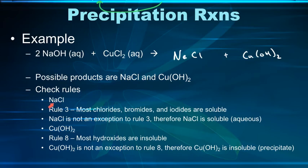Let's check the rules. So for NaCl, immediately, rule 1 will tell you that all 1A metal compounds are soluble. Well, sodium is a 1A metal, but also rule 3, most chlorides, bromides, and iodides are also soluble. So no matter what, NaCl, even rule 1 will help you here with 1A metals. They are all going to be soluble.